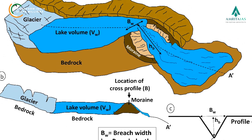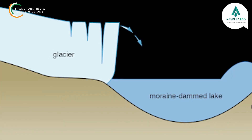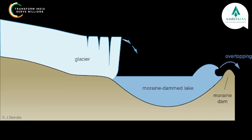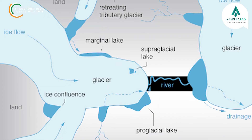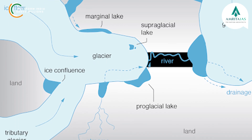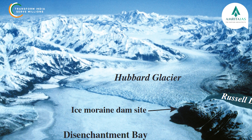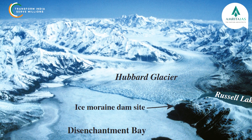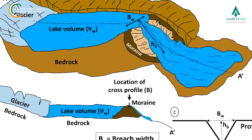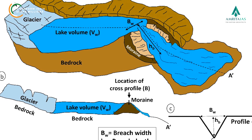Glacial lakes are common in the high elevation of glacierized basins. They are formed when glacial ice, moraines, or natural depressions impound water. There are varieties of such lakes, ranging from meltwater ponds on the surface of a glacier to large lakes in side valleys dammed by a glacier in the main valley. These lakes normally drain their water through seepage in front of the retreating glacier.